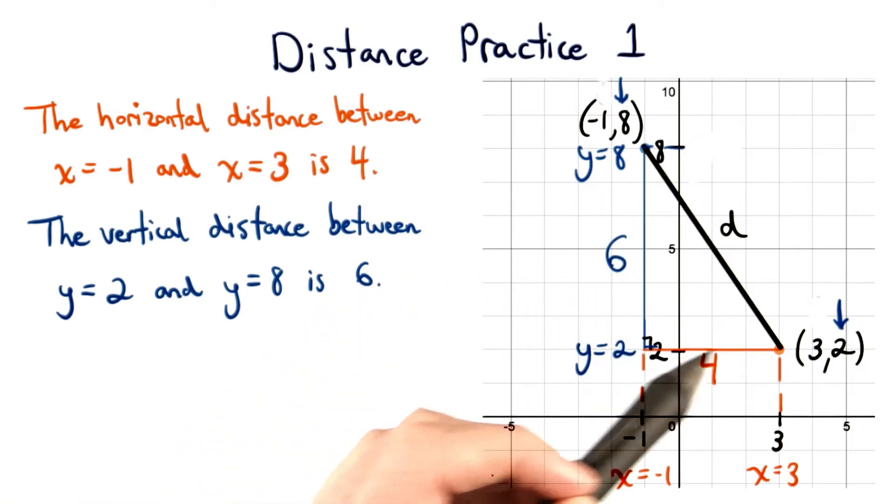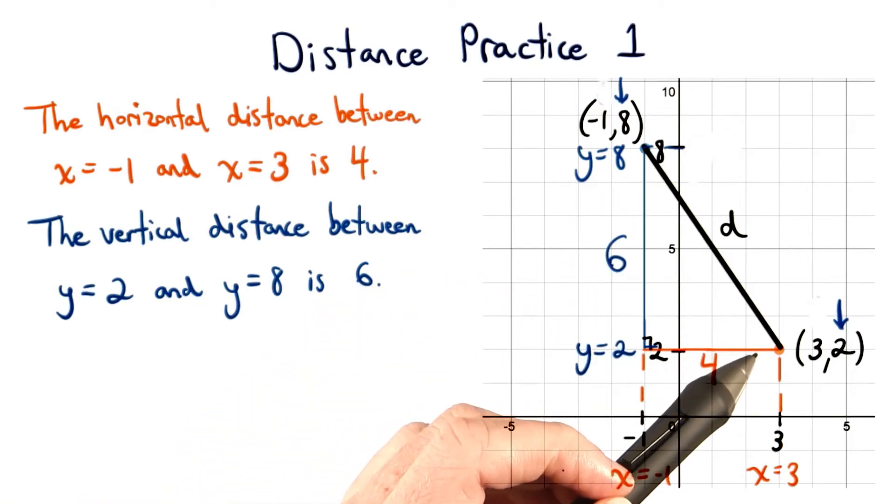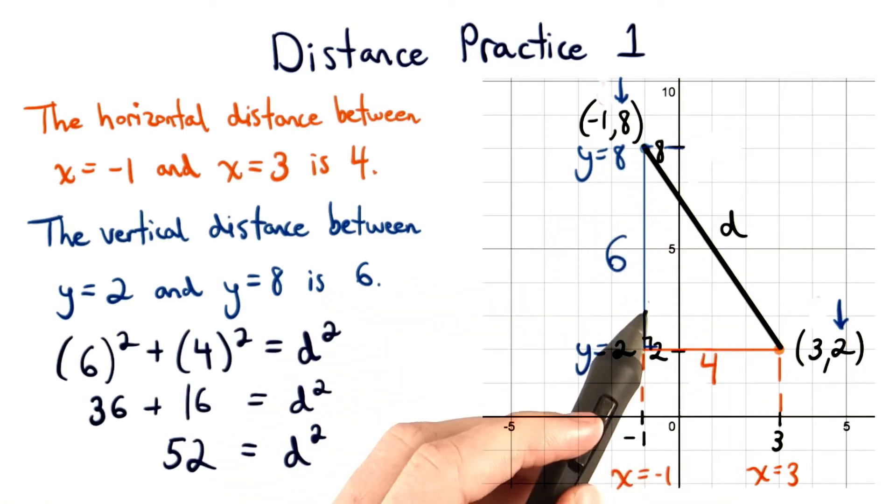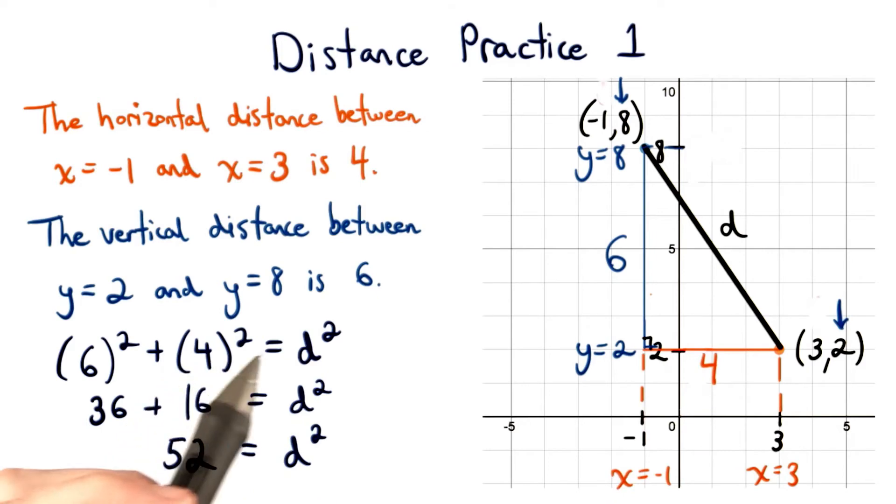Once we've found these two legs of our right triangle, we can use the Pythagorean theorem to find the hypotenuse. So we'll have this leg squared plus this leg squared equals d squared, our hypotenuse.